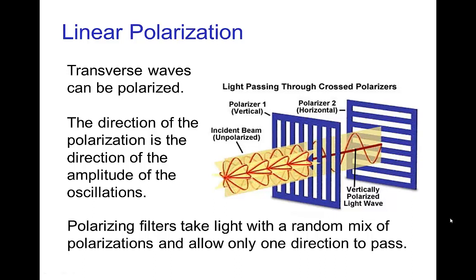Light waves are transverse waves, so they can have a polarization. The direction of the polarization is the direction of the amplitude of the oscillation — so it could be vertical oscillations or horizontal oscillations. Polarizing filters take light that is a mix of polarizations of all different angles and filter them so that we have only one direction, typically either vertical or horizontal.